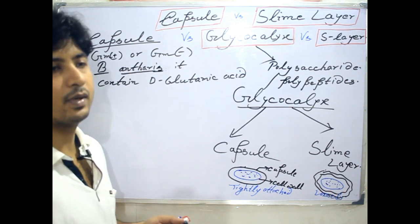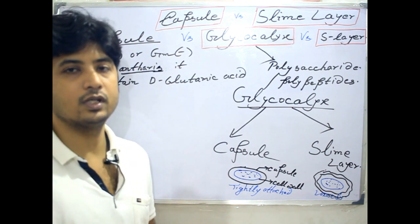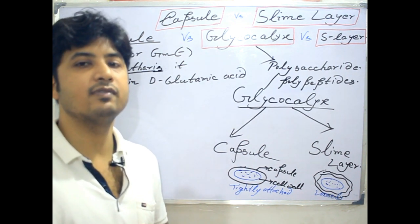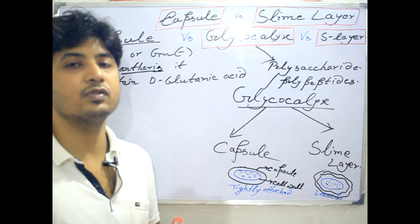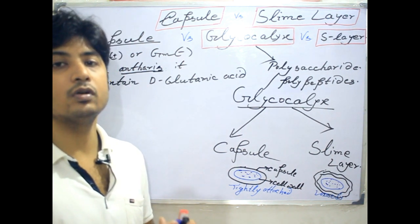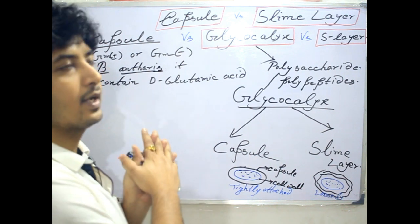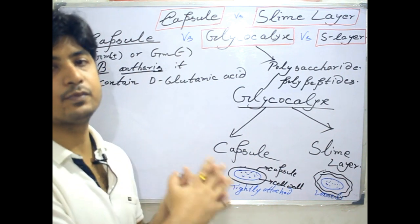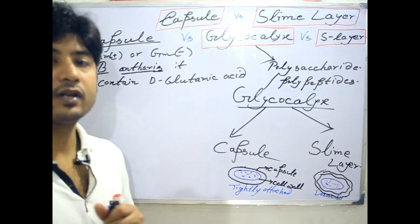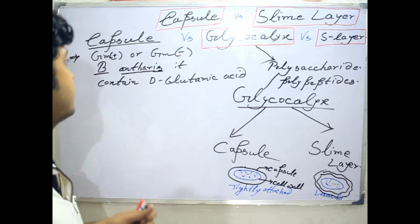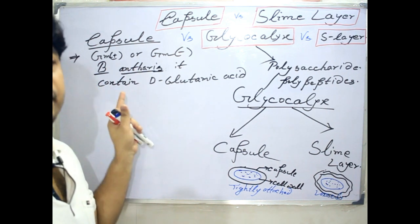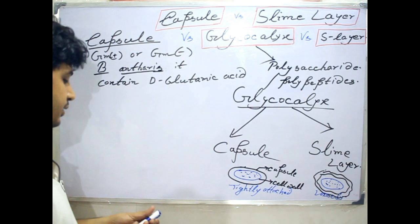The capsule works as an offense mechanism because it can bypass phagocytosis. When bacteria enter the human or animal body, the macrophage is the primary line of defense and will phagocytose external antigens. However, for bacteria which contain a capsule as their defense mechanism, phagocytosis is not possible — that's why they can overcome the phagocytosis process. This is a very important aspect of bacterial pathogenesis.